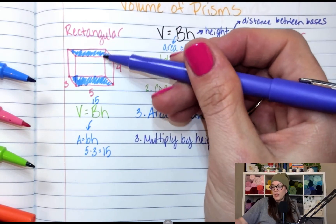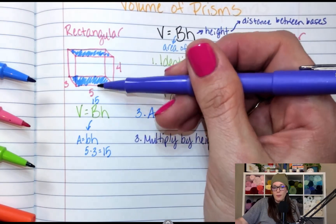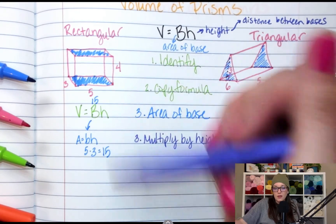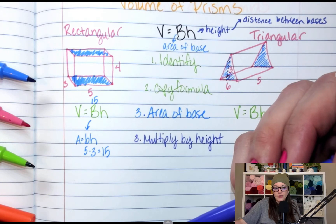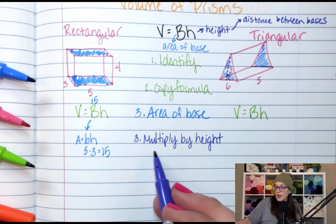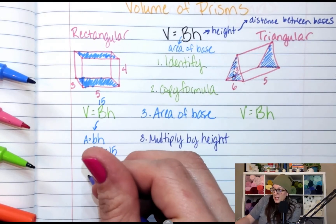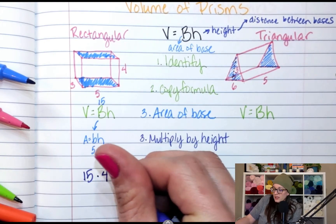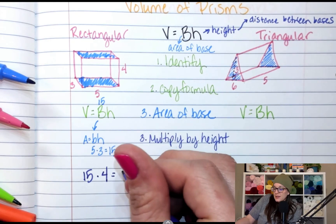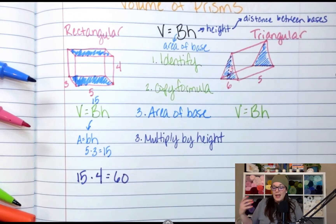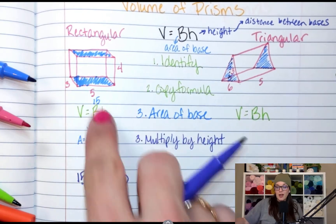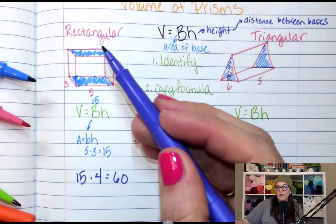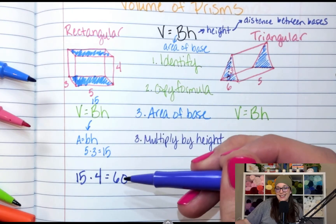So over here, I'm looking for the number between the blue rectangles. Which number is between the blue rectangles? Four. So when I multiply by height, I'm going to take 15 times four, which is 60. Now that's it. The volume. So if I filled this rectangle up, the volume of this rectangular prism is 60.